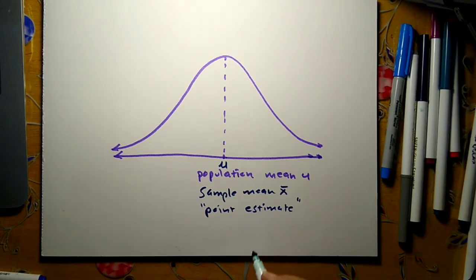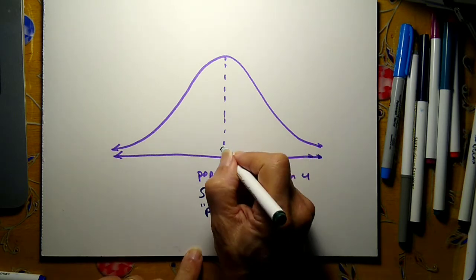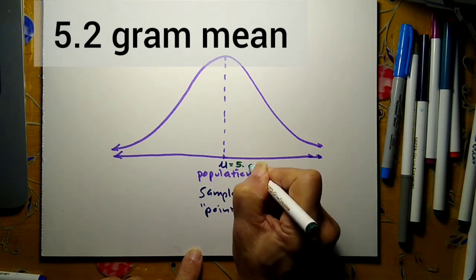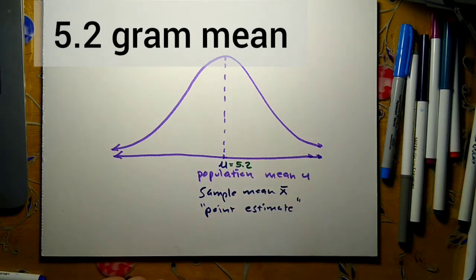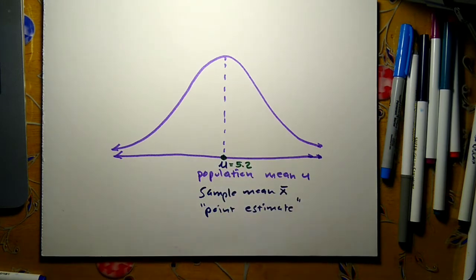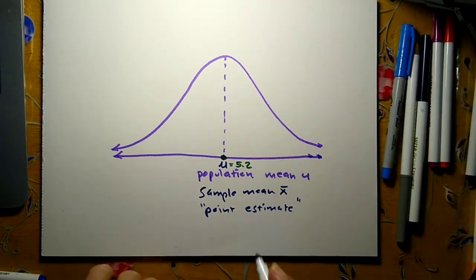I'm going to use the marble example from section 5.3. I'll link the video below. In that case, the mean was 5.2 for our 184 marbles. So this would be 5.2 grams. And the standard deviation in that particular example was 0.4, I'm rounding off here.